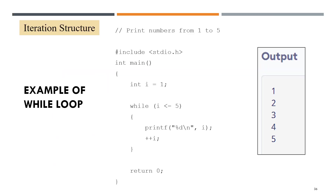Next, an example of a while loop to print numbers 1 until 5. The initial value of i is 1; while i is less than or equal to 5, print i, then increment i with i++.